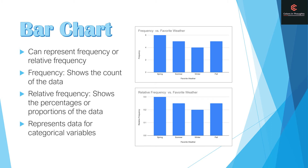Now let's look at a bar chart. A bar chart can represent frequency or relative frequency. Frequency shows the counts of the data, while relative frequency shows the percentages or proportions of the data. A bar chart represents data for categorical variables.